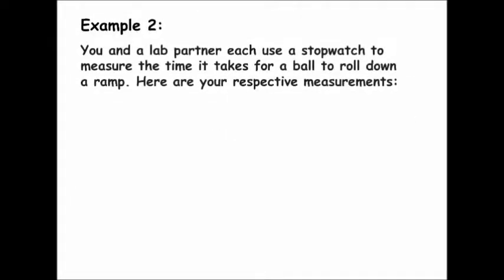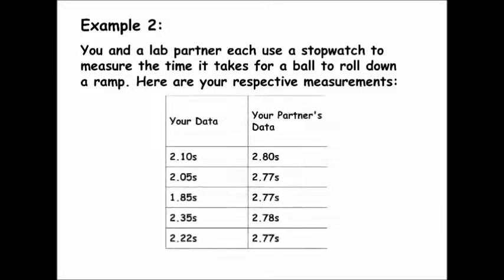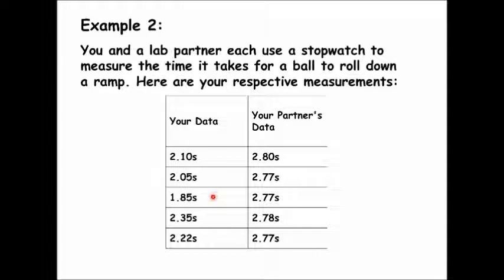Here's another example. Let's say you and a lab partner each use a stopwatch to measure the time it takes for a ball to roll down a ramp. Your measurements were: 2.10, 2.05, 1.85, 2.35, and 2.22 seconds — you can see that they're not that close to each other.